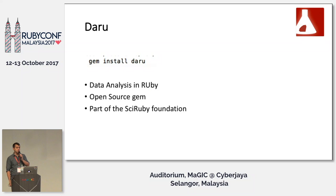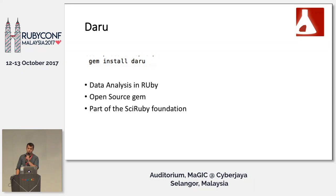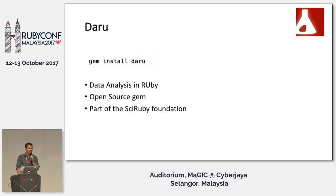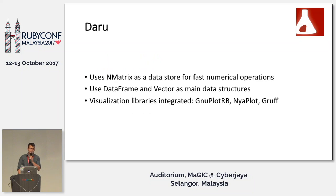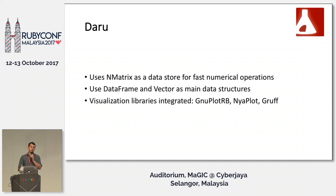Another gem I contribute to is the Daru gem, which is part of the SciRuby library. It was created by Samir Deshmukh in 2014. It stands for data analysis in Ruby — although apparently it's also a Hindu word for alcohol, which he took some inspiration from. You can think of it as Ruby's nearest native equivalent to Pandas. It uses nmatrix as its equivalent to NumPy for fast numerical operations. Its data structures are the data frame and the vector rather than the series. It also has various visualization libraries integrated, although they are probably more fragmented and less complete than what you get with Python.